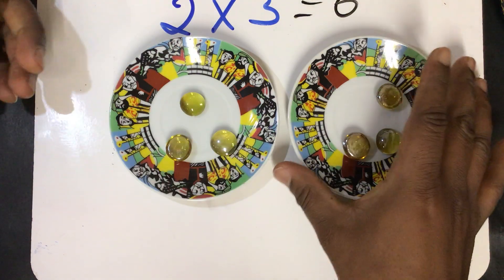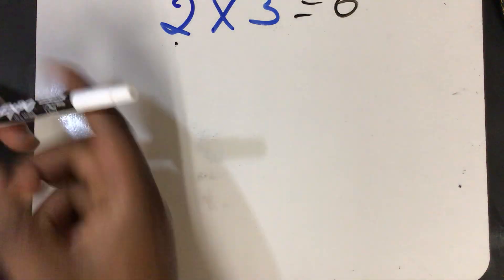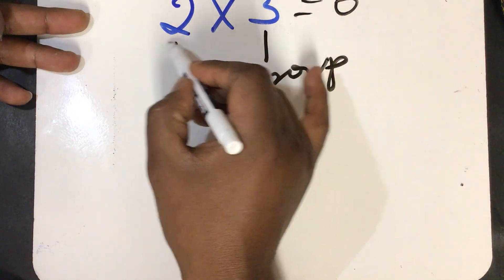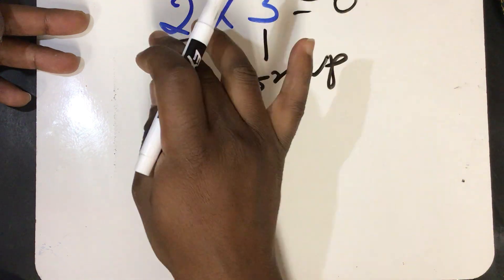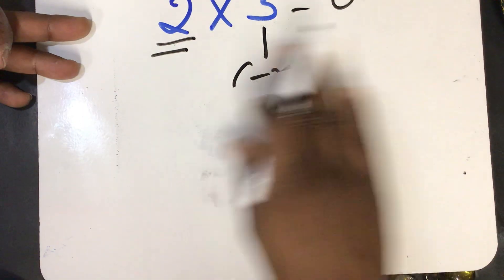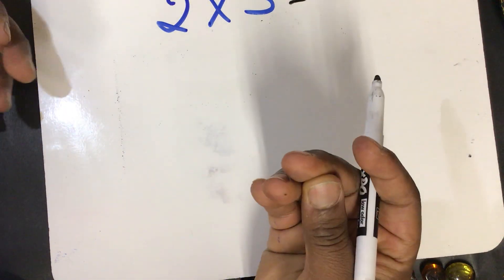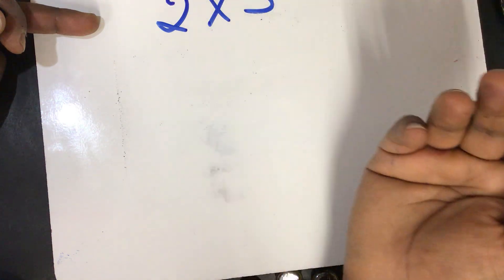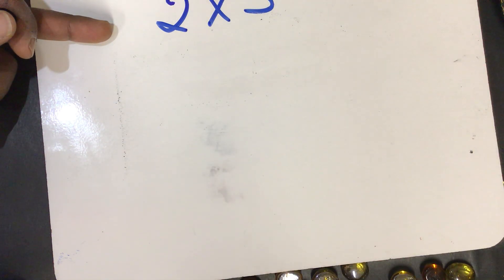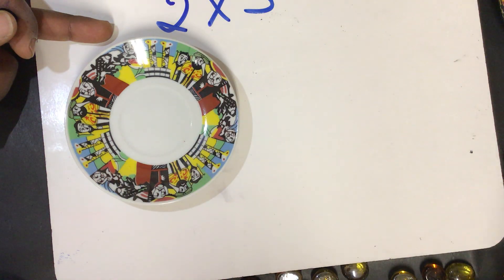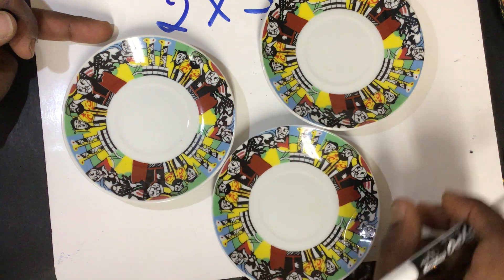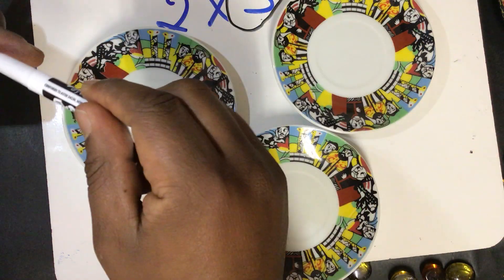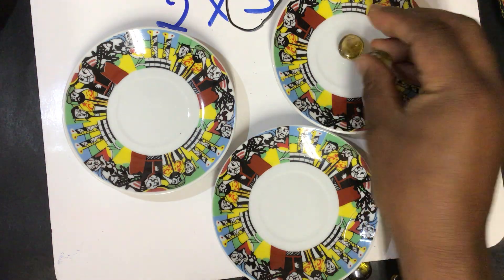The other one is the group. The group is the group. If you have the group, you can see the group. If you want to make a source group, we will use the source group. This is the source group, and if you want to make a source group, you will use the source group.